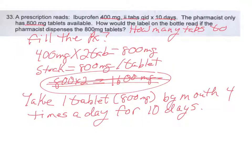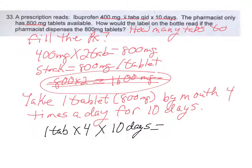My second question was: how many tablets to fill the prescription? Since we're only going to need one tablet per dose, the patient takes one tablet, four times a day, times 10 days. One times four is four, times ten is 40. So this patient needs 40 tablets to fill the prescription. Hopefully this tutorial helped you figure out the amount to dispense. Bye.